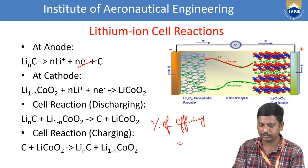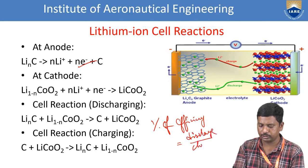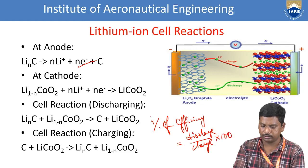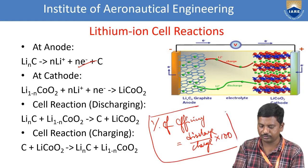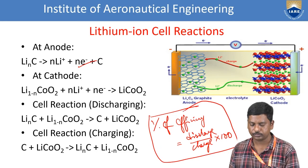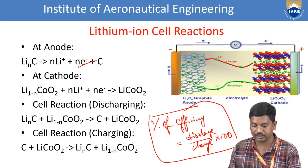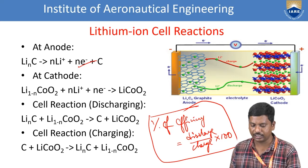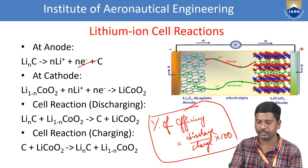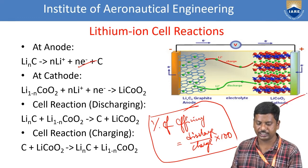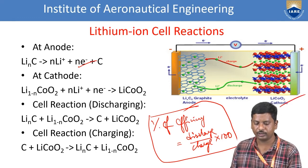The percentage of efficiency equals the ratio of discharge to charge, multiplied by 100. In this setup, graphite acts as the anode on the left, the electrolyte is in the center, and lithium cobalt oxide is the cathode on the right.